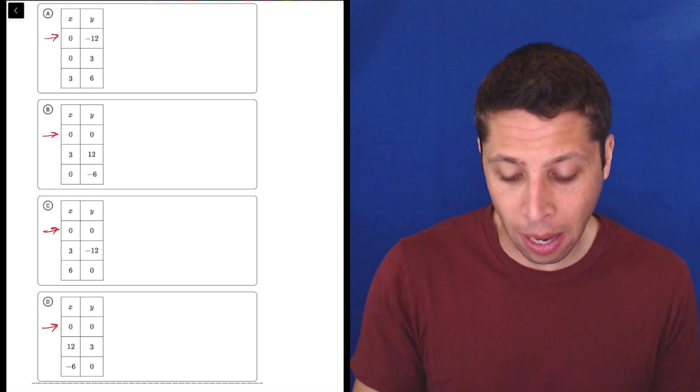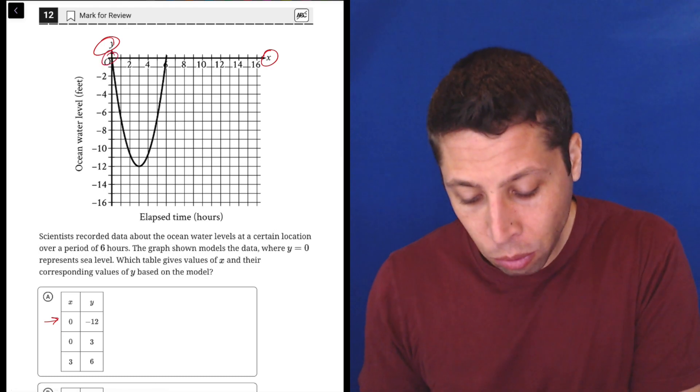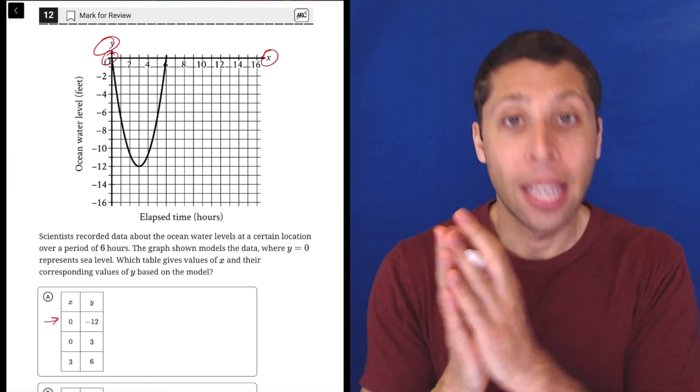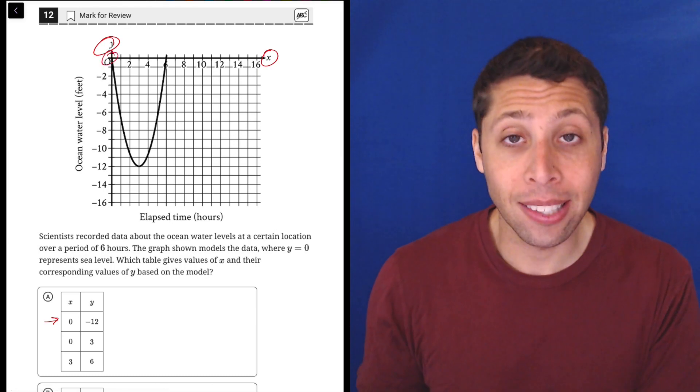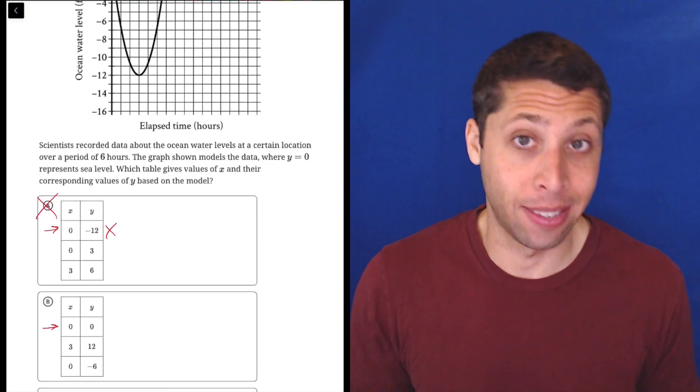So I would just be like, what is my Y intercept? I've got some options, negative 12 or zero. The Y intercept is right here. It's where this parabola hits the Y axis, which is at the point zero, zero. So that gets rid of choice A, just like that, because that point is incorrect.